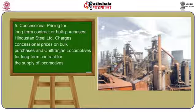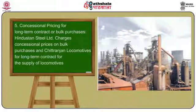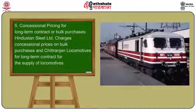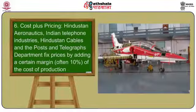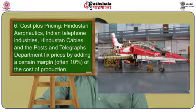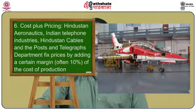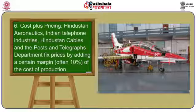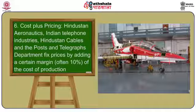Concessional pricing for long-term contract or bulk purchases: Hindustan Steel Limited charges concessional prices on bulk purchases, and Chittaranjan Locomotives for long-term contracts for the supply of locomotives. Cost plus pricing: Aeronautics, Indian Telephone Industries, Hindustan Cables, and the Posts and Telegraphs department fix prices by adding a certain margin to the cost of production.